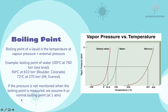If the pressure is not mentioned, we assume it is the normal boiling point at 1 atmospheric pressure. Looking at the vapor pressure vs. temperature graph: diethyl ether boils at 34.6°C, water at 100°C, and mercury at 357°C at 1 atm (760 mmHg). The boiling point is the point where external pressure equals vapor pressure.